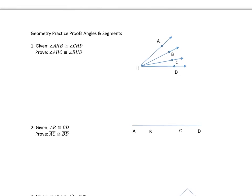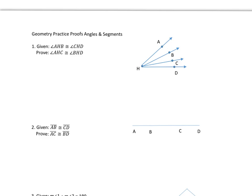On this first question it says, given the measure of angle AHB — so AHB is right here — is congruent to CHD. So that's what we are looking at: AHB congruent to CHD. And we've got to prove that AHC, this whole one, is congruent to BHD, that one right there. So let's work with this and see what we can come up with.